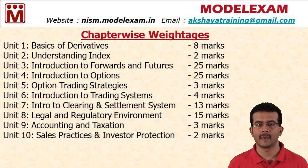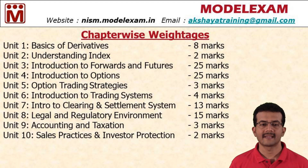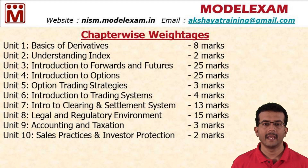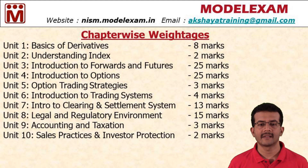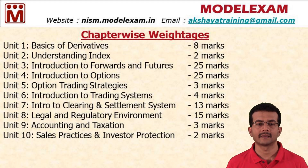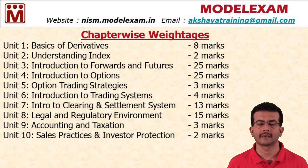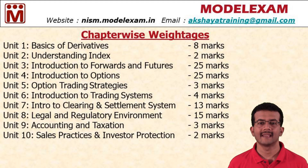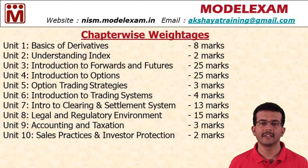Unit 7, Introduction to Clearing and Settlement System, carries 13 marks. Unit 8, Legal and Regulatory Environment, carries 15 marks. So these four units carry 78 marks out of a total of 100 marks, and you need to concentrate more on these four chapters.